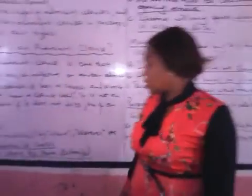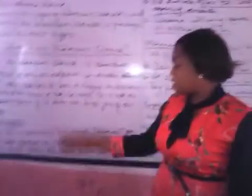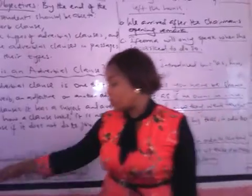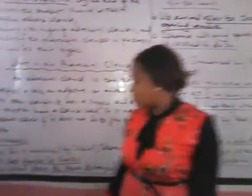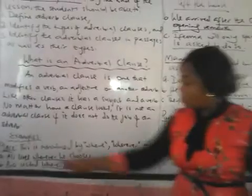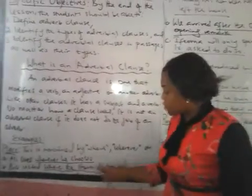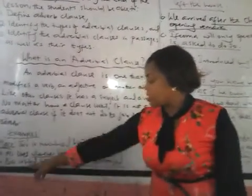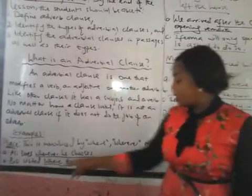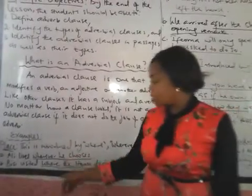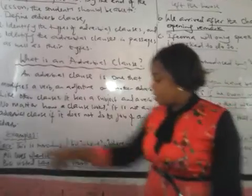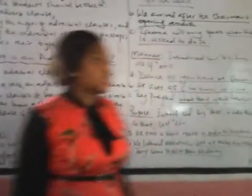So we begin with place. Place is introduced by 'where' — basically 'where' and 'wherever.' For example: 'Ali lives wherever he chooses.' 'Wherever he chooses' modifies the verb 'lives.' Another example: 'BC visited where the storm destroyed.' 'Where' is introducing this clause, modifying 'visited.'